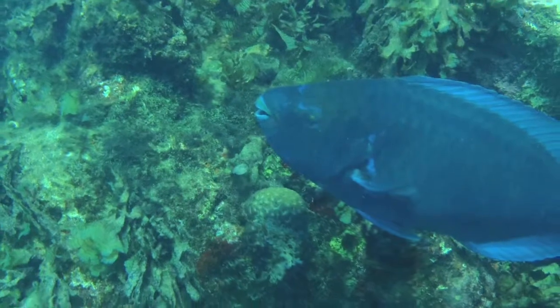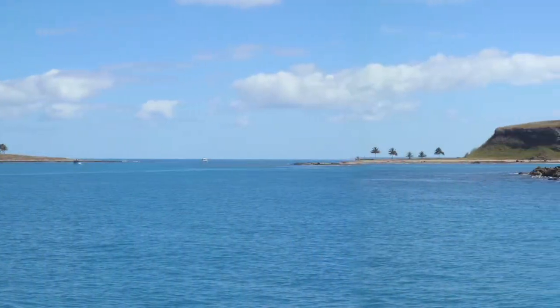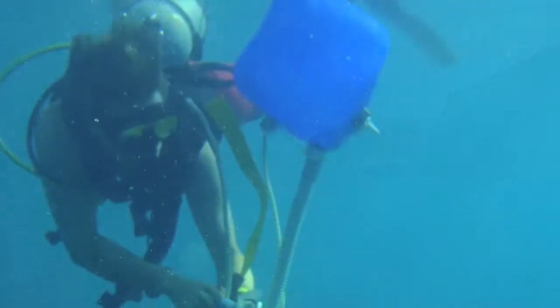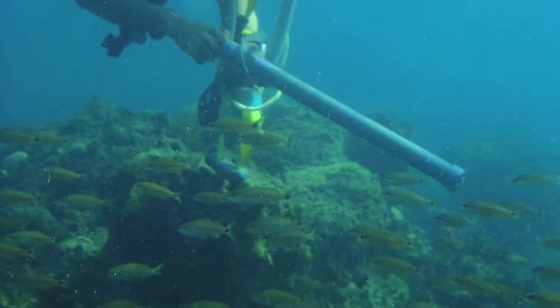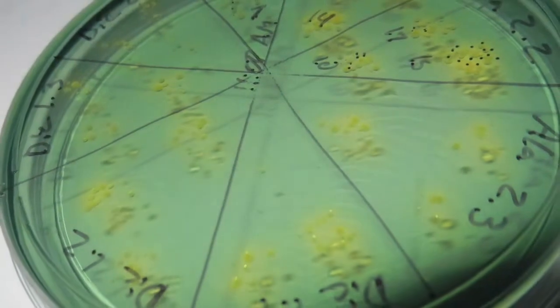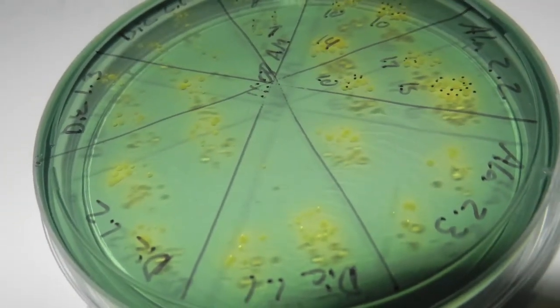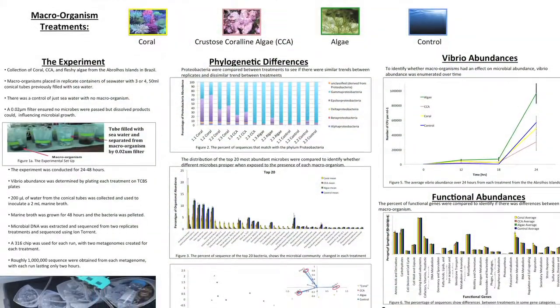From that we actually found some great differences between the corals, the algae, the crustose coralline, and the water. While we were in the field we set this experiment up in Brazil and I had several of my students come down with me and help set that up. Matt is actually going to tell you about the experimental setup. And then when we came back several of my undergraduates were working on the analysis of these metagenomes, and Kevin is going to tell you about what we found in the analysis of those sequences.